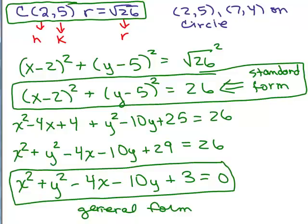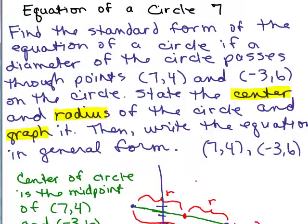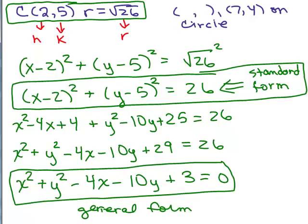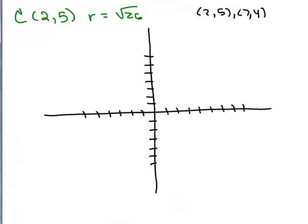I just found a mistake here, I copied this wrong. It was not (2,5) that was on the circle. It was (-3,6). I just noticed I wrote the same thing for the center as a point on the diameter. It's not (2,5), it's (-3,6).